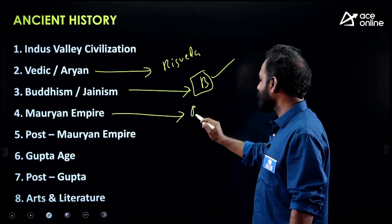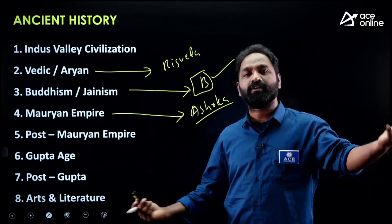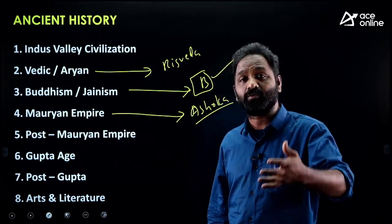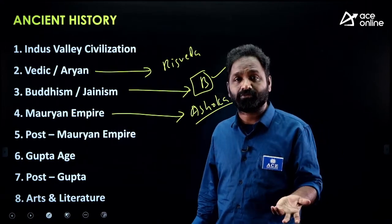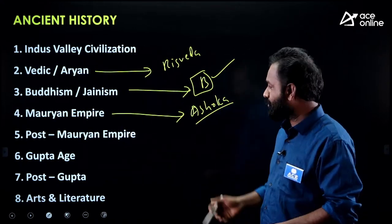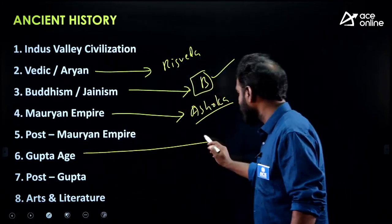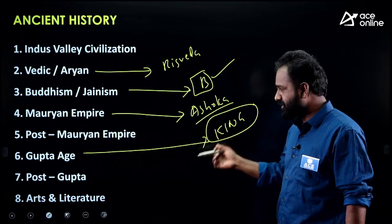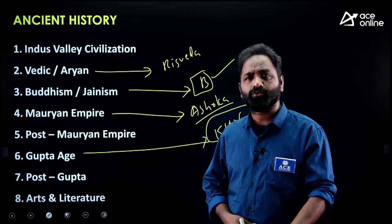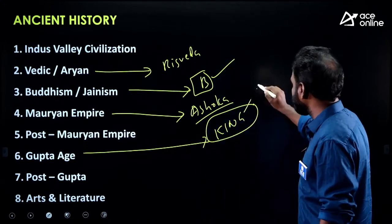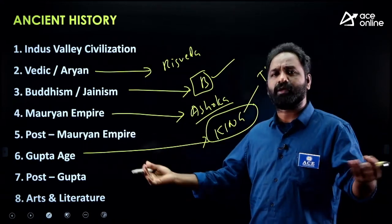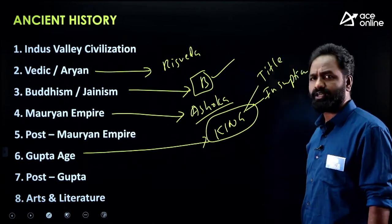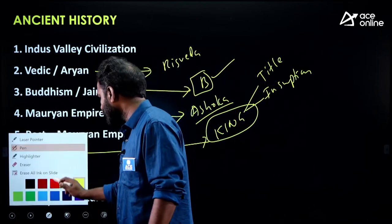For Mauryan Empire, the most important figure is Ashoka. Focus on Ashoka: he issued a number of inscriptions, fought the Kalinga War, and inscriptions were found in different places of India. Basic questions are asked about Ashoka's inscriptions, Kalinga War, the language used, and the script used. For the Gupta period, they mostly ask about kings — Samudragupta, Chandragupta I, Chandragupta II, Kumaragupta — their titles, and inscriptions like the Allahabad Inscription.